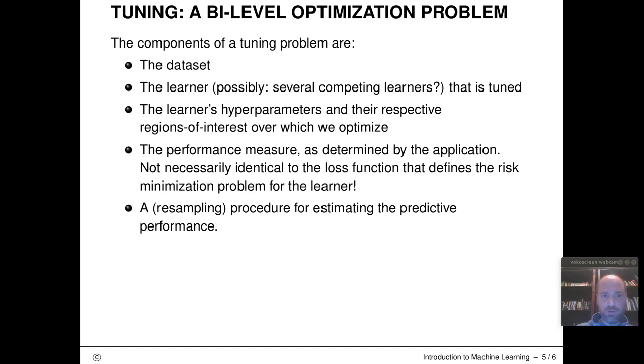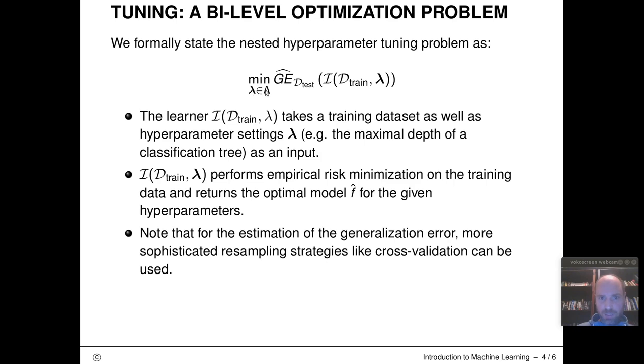There's the learner's hyperparameters and their respective regions of interest over which we optimize. So this is this capital lambda guy here. Then there's the performance measure.